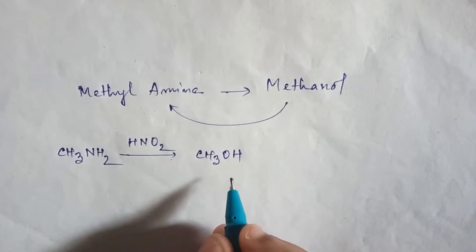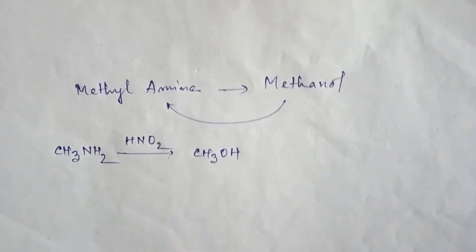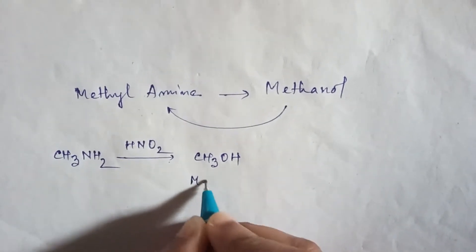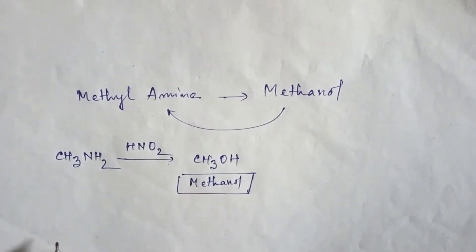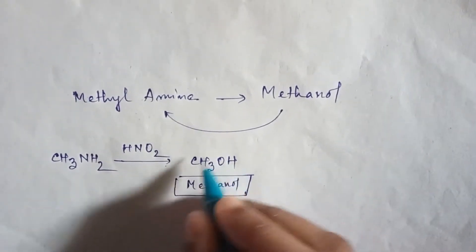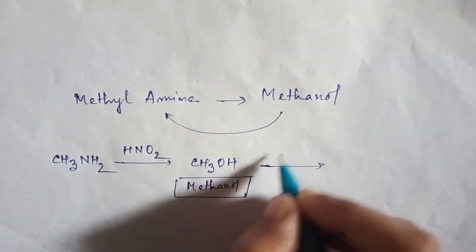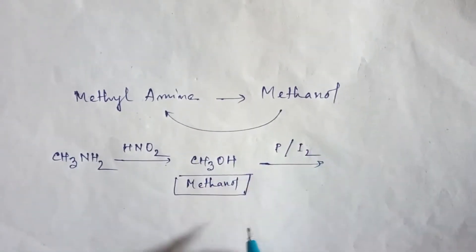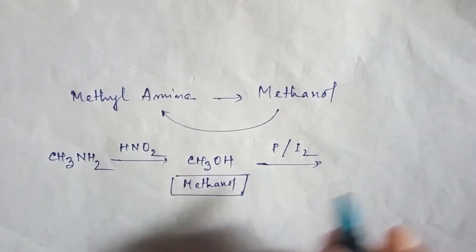Now we will see how to get methyl amine from methanol, that is the reverse process. So here write methanol. Now if you treat this methyl alcohol or methanol by phosphorus and iodine, then this OH group will be replaced by iodine and it will be methyl iodide.